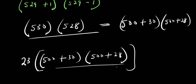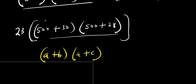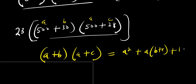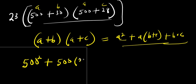So we need to multiply this out, and to achieve that we are going to use the identity: if you have a plus b times a plus c, this equals a squared plus a times the quantity b plus c, plus b times c. Because b and c are different, that is why we are using this identity. So right now, a squared where a is 500 gives 500 squared, plus 500 times the quantity 30 plus 28, plus 30 times 28.